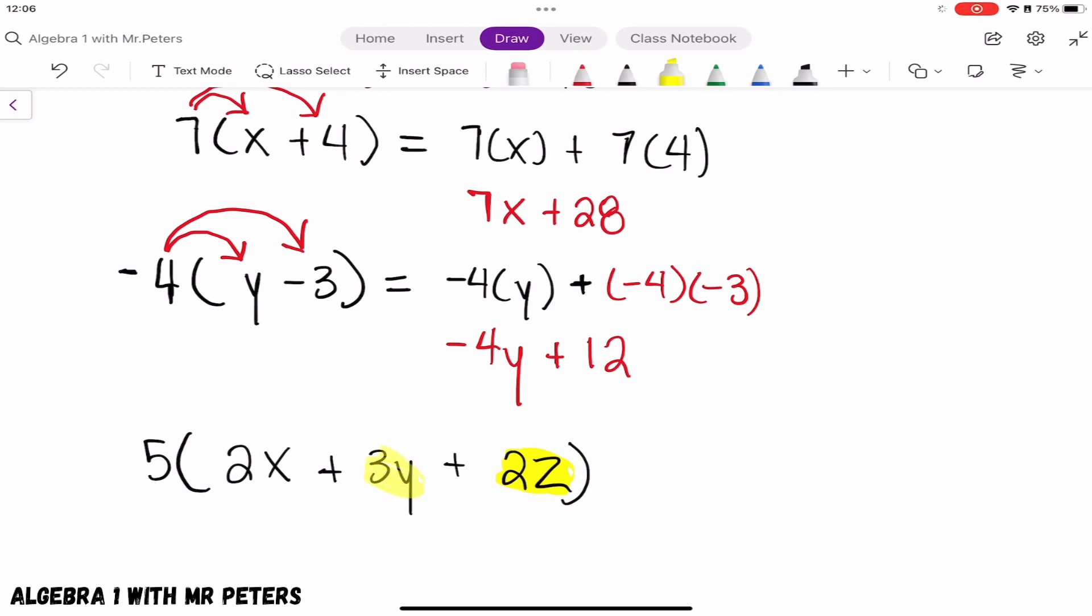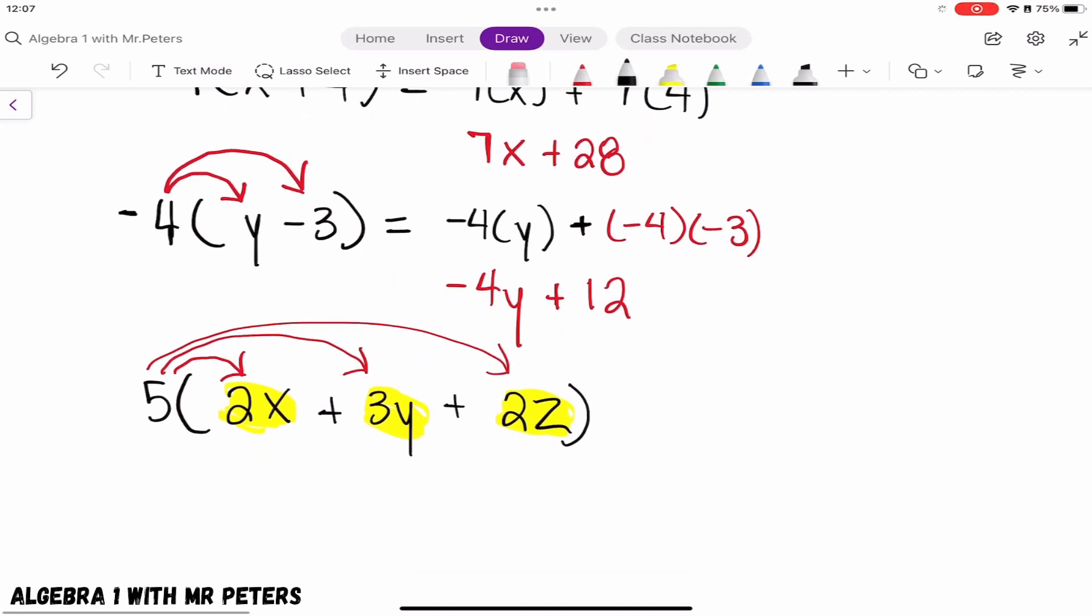The only difference is we're going to multiply three times instead of two. Let's scroll the screen up and actually distribute with this problem. So in this problem, we're going to have 5 times each term.